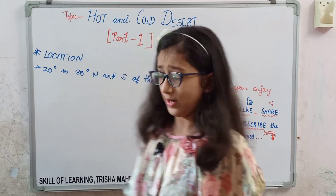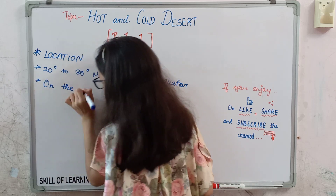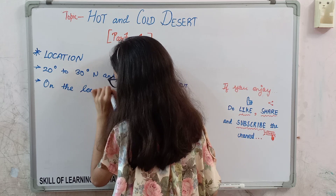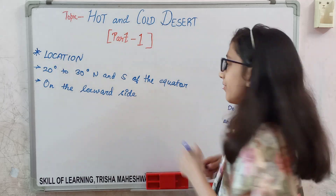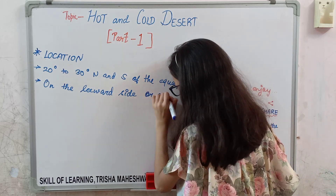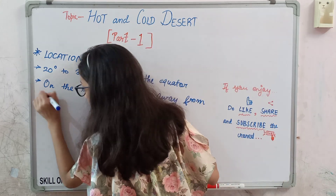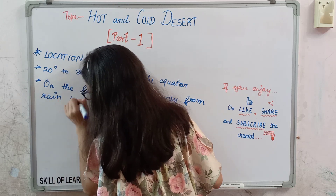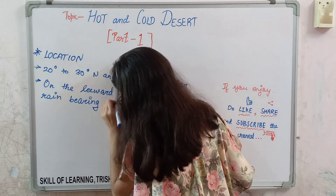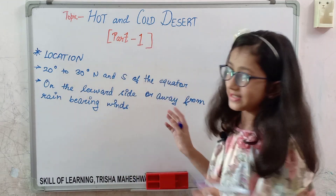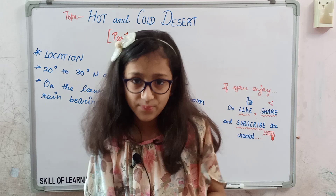Most of the deserts are located on the west side — you will notice that. They are away from the winds, or away from rain-bearing winds. So the climate is arid, meaning it is completely dry.